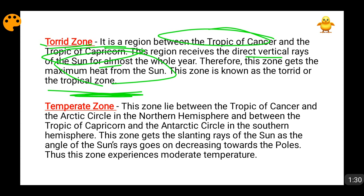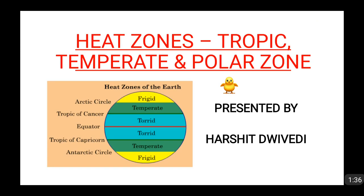If it is going to receive the maximum heat, obviously the temperatures will be high. This is the tropic of cancer, and this is the tropic of Capricorn, and the whole area in between is termed as the torrid zone or tropical zone. When I will tell you about the solstice and equinox videos, you will see that the movement of the sun is almost between the tropic of cancer and the tropic of Capricorn.